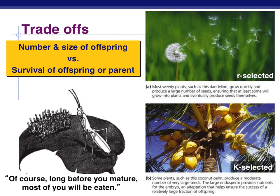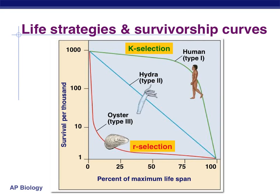These are just some pictures to help you visualize R-selected and K-selected. The trade-offs we have to consider: the number and size of our offspring — how many can we have and how big are the babies — versus the survival of the offspring or the parent. The type 1 survivorship curve is indicative of a K-selected organism, whereas the type 3 curve will be showcasing an R-selected organism.